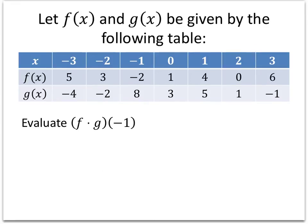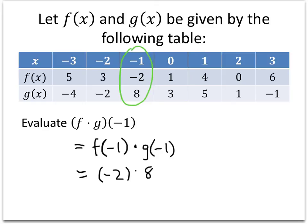This time we want f times g of negative 1. And again, it's the same idea. f times g is a function, and the rule for f times g is you take what you plug into f times g and you plug that separately into f and g. And what you do with the two answers that you get this time is you multiply them. In our chart, we're looking at the x equals negative 1 entry, and what we see there is that f of negative 1 is negative 2, and that g of negative 1 is 8, and negative 2 times 8 is negative 16.